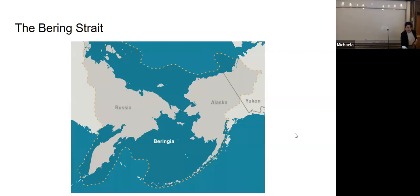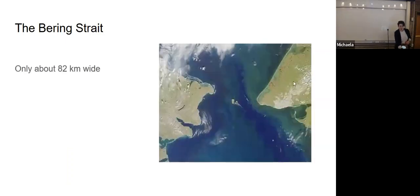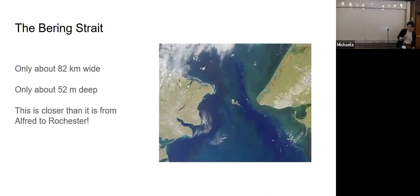There's actually settlement on those islands. People live there. The Bering Strait is only about 82 kilometers wide. And importantly, it's only about 52 meters deep. To give you some context, it's closer across the Bering Strait than it is from here to Rochester. If you could drive across the ocean, you could make it to Siberia from Alaska in less time than it would take you to get to Rochester.